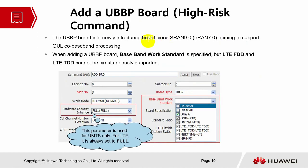Adding a UBBP board is considered the latest board, aiming for GUL co-baseband processing. When adding it, you need to define the baseband work standard. If you're using LTE FDD and TDD, only one can be supported at a particular time — they cannot be simultaneously supported. For this example, they are using either one only. For the hardware capacity, it is only used for UMTS; for LTE it is always set as full.